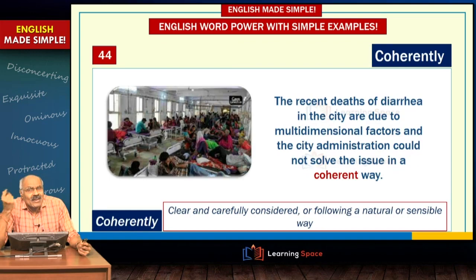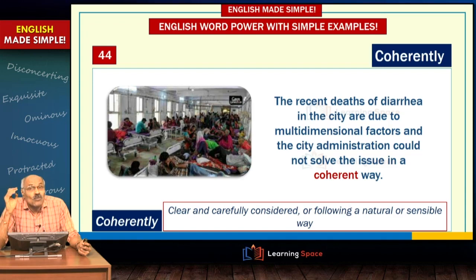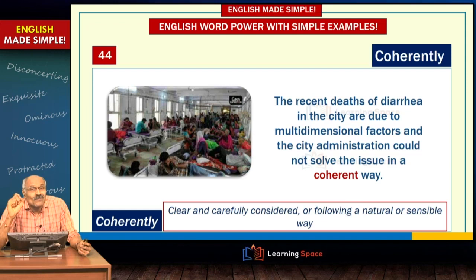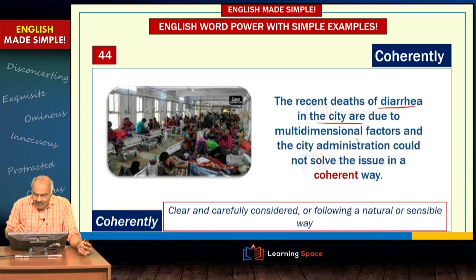Next word: 'coherently'. If there is a problem — say, for example, diarrhea in one particular city — you have to look at it from a multi-dimensional perspective. You have to carefully consider various aspects: whether polluted water is being supplied, whether sanitary pipelines are proper, whether any festival or fair has taken place, whether there is a mix-up of sewage water and water supply.